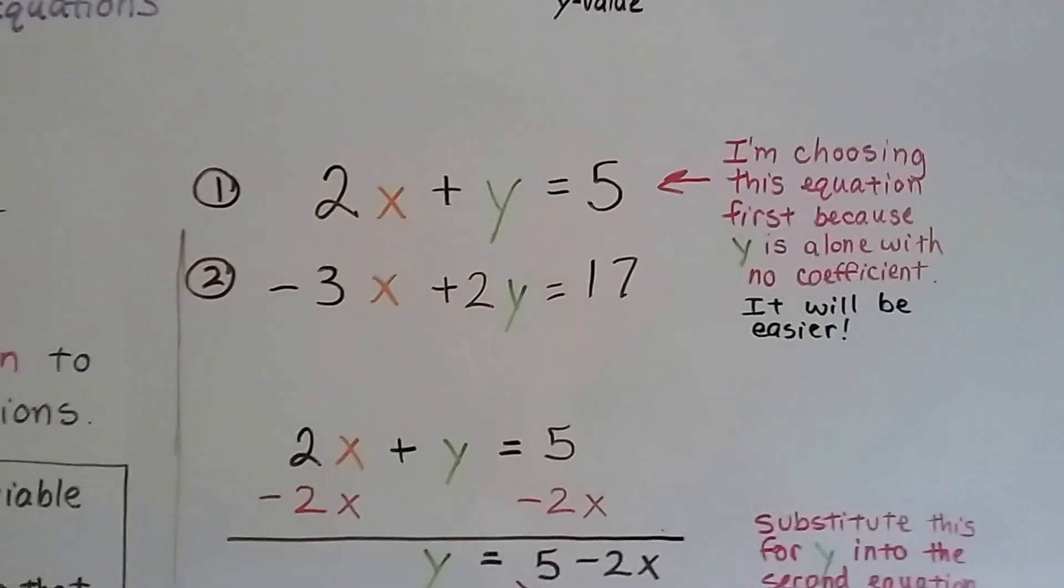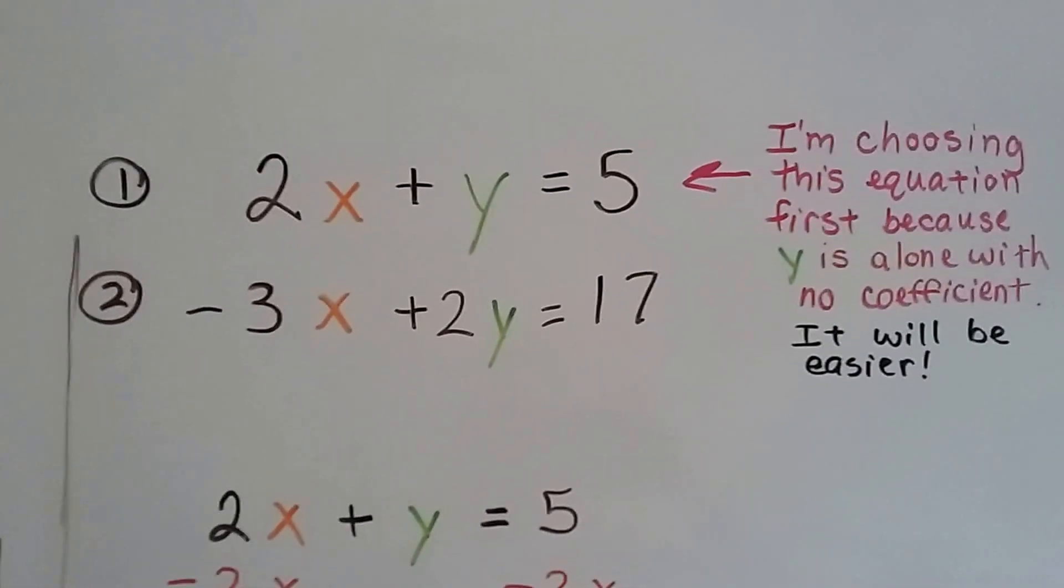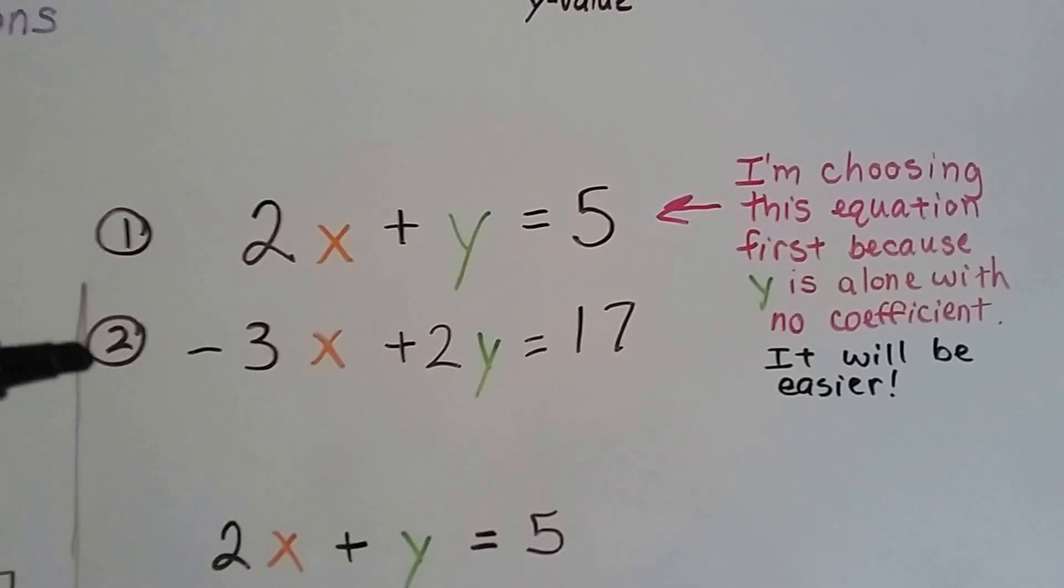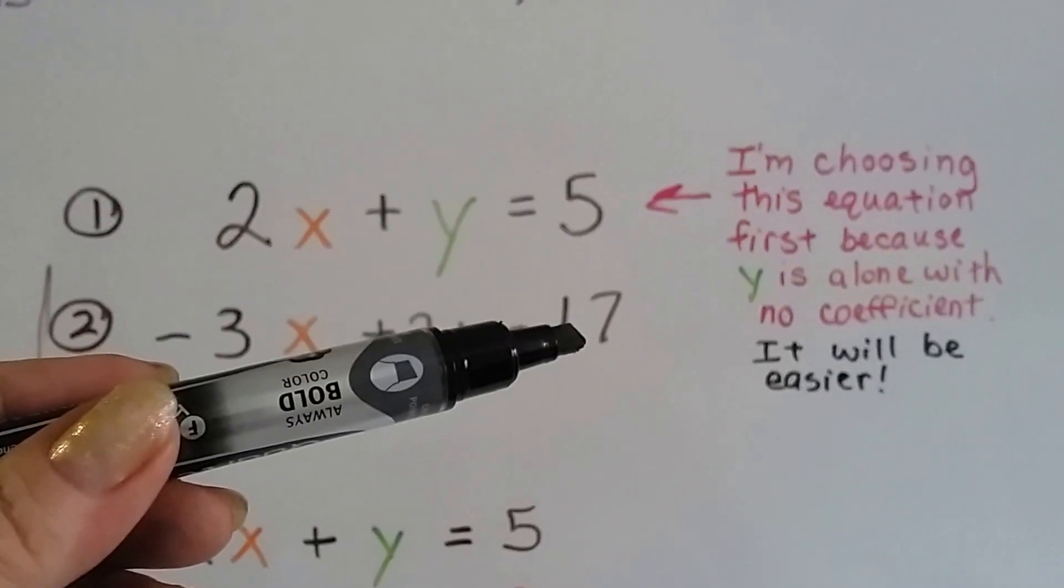So here's our system of equations for this video. Our first equation is 2x plus y equals 5, and our second one is negative 3x plus 2y equals 17.